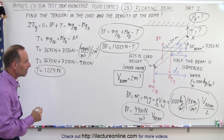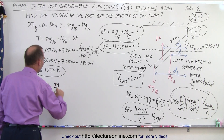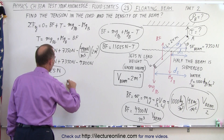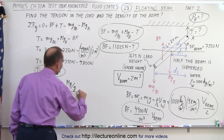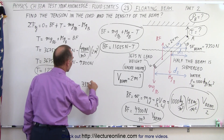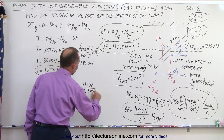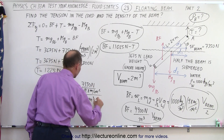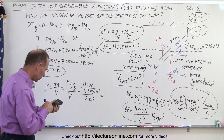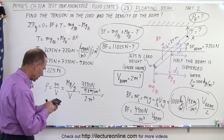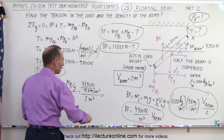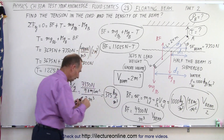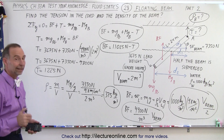Now for the density of the beam. The density is equal to the mass divided by the volume. The mass is the weight divided by g, so that's the weight of the beam — 7350 newtons — divided by 9.8 meters per second squared, which gives us mass in kilograms, and then divided by the volume of 2 cubic meters. So 7350 divided by 9.8 and then divided by 2 gives us 375 kilograms per cubic meter. And there's the density of the beam and the tension in the cord.